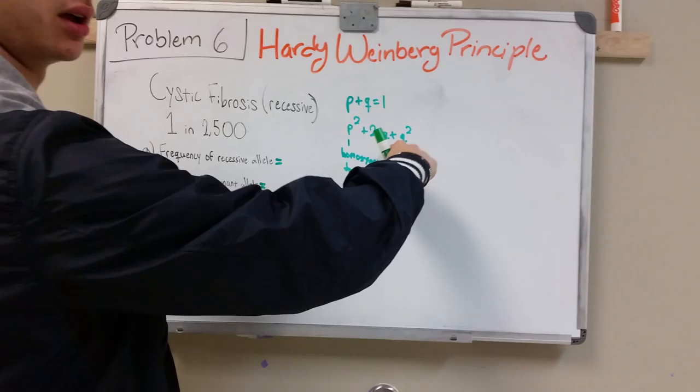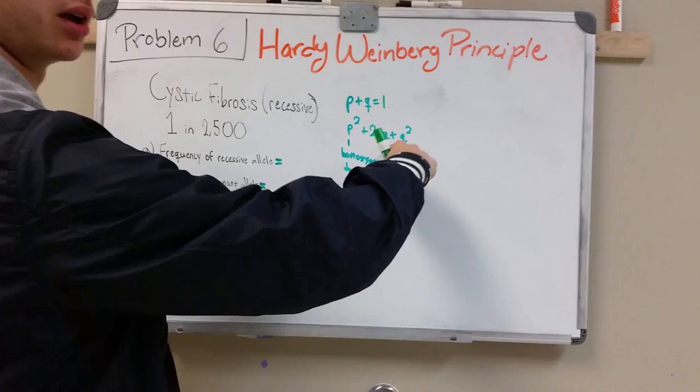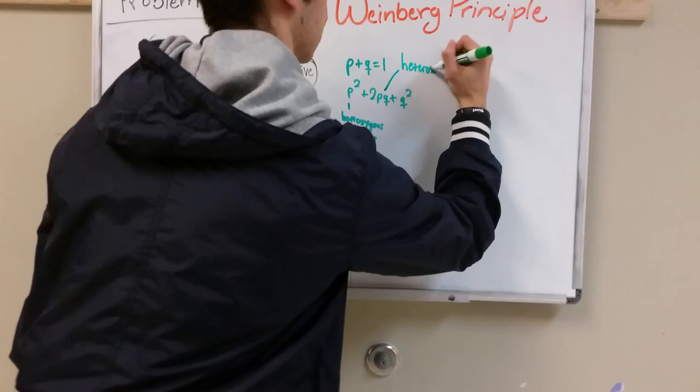And 2PQ would be the heterozygous. And the last one you can guess would be homozygous recessive.